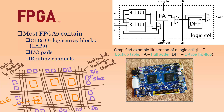We will see the internal structure — what's inside the FPGA — and try to understand it in terms of a block diagram. Here is an FPGA board by some manufacturer, and here is the FPGA chip, which is basically a programmable IC. We can program any logic function into it. Most FPGAs contain CLBs — Configurable Logic Blocks — also called LABs, Logic Array Blocks.